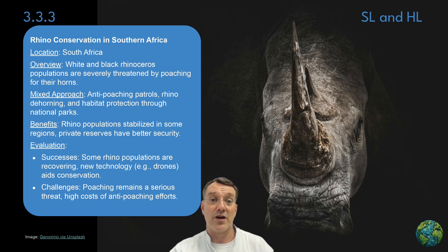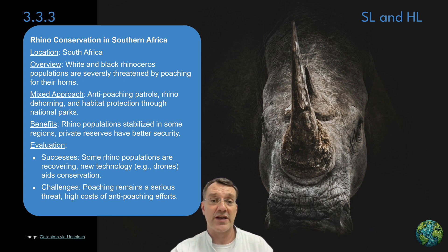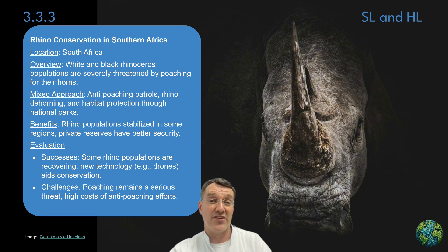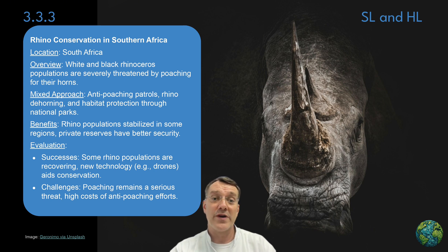Rhino conservation in southern Africa, particularly South Africa, addresses the severe threat to white and black rhino populations from poaching for their horns. The mixed approach includes anti-poaching patrols, rhino dehorning to reduce poaching incentives, and habitat protection through national parks. Benefits include stabilized rhino populations in some regions and better security in private reserves. While some populations are recovering and new technology like drones aids conservation, poaching remains a serious threat with high associated costs.